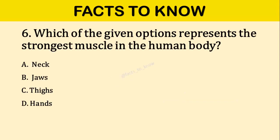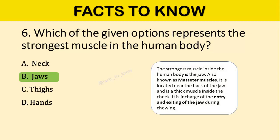Question number six: Which of the given options represents the strongest muscle in the human body? The correct answer is option D: Jaws. It is also known as the masseter muscle.